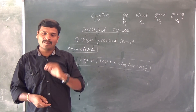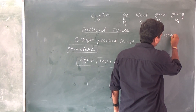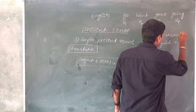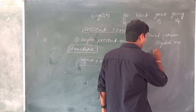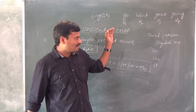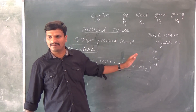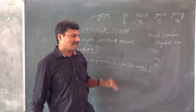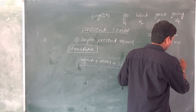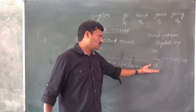In simple present tense, for third person singular number — that means he, she, it, or a name — we have to add s, es, or ies to verb one. When the subject is third person singular number like he, she, it, or a name, we add s, es, or ies. Keep this in mind as it makes it very easy to understand.